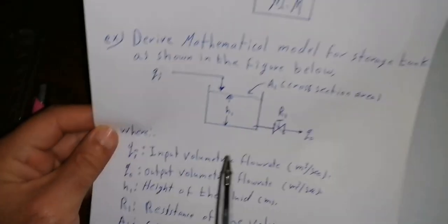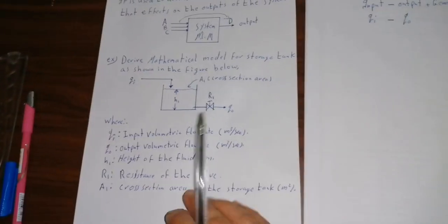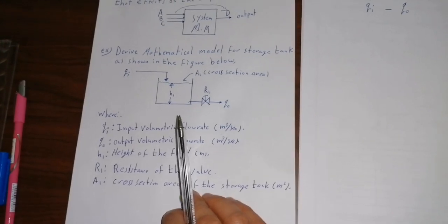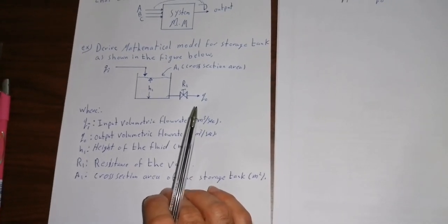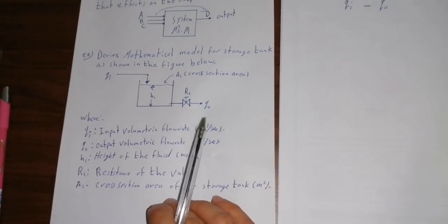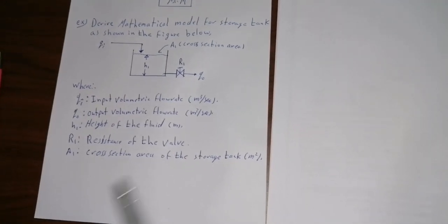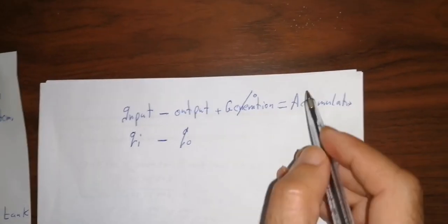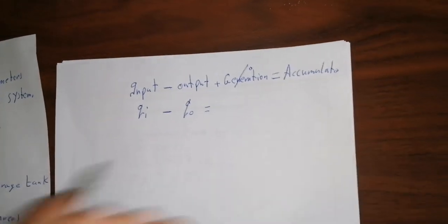Generation means producing or creating a new material, and this cannot be done without a chemical reaction. In the storage tank there is no chemical reaction, so generation equals zero. Therefore: QI minus Q_out equals Accumulation.